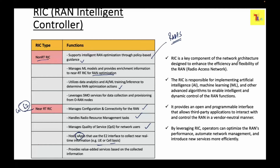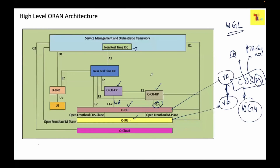The RIC is a key component of the network architecture designed to enhance efficiency and flexibility of the radio access network. It is responsible for implementing artificial intelligence, machine learning, and other advanced algorithms to enable intelligent and dynamic control of RAN functions. The SMO is an automation framework that uses AI/ML and data analytics — the Near-RT RIC collects information from O-CU-CP, UP, and DU about cell and UE data through the E2 interface.